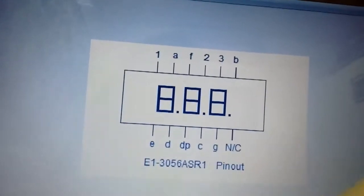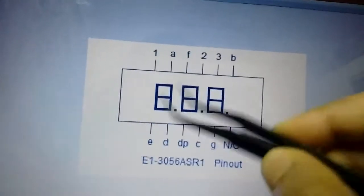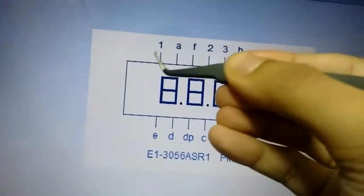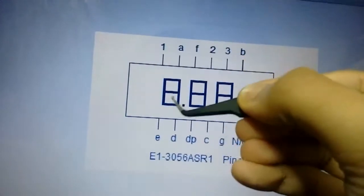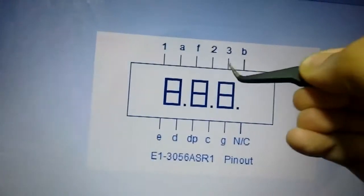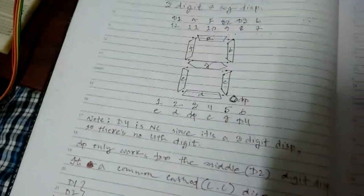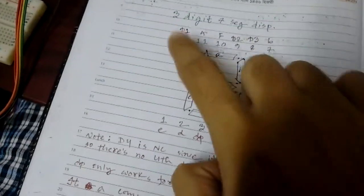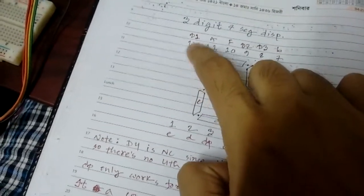So there's only one A, only one B pin, and only one D pin and so on to G. And they have one common pin for digit one, this is digit one, digit two, and digit three.